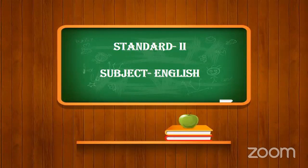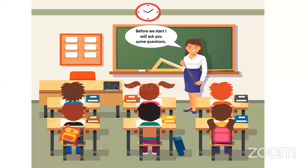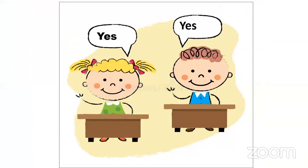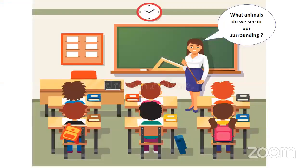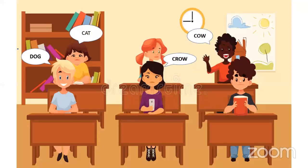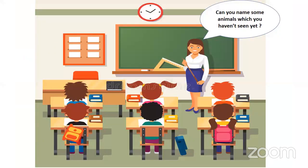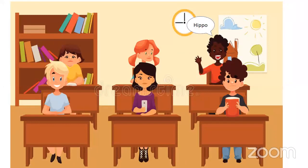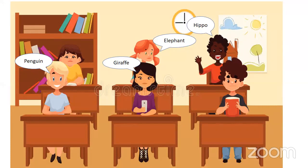Before we start the lesson, I will ask some questions. Do we see animals around us? Yes, we see many animals around us. What animals do we see in our surrounding? We see dogs, cats, crow, cow and mouse and many birds.